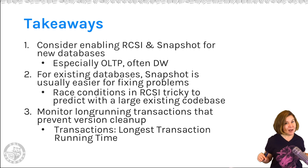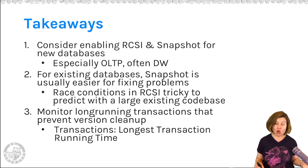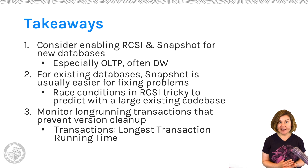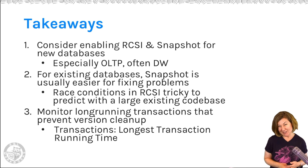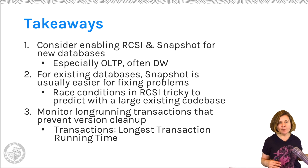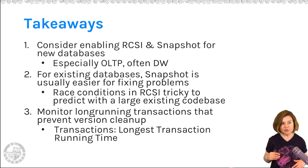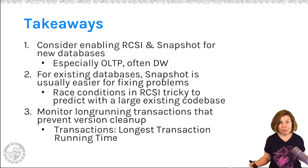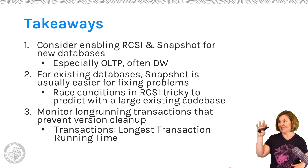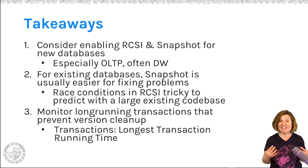Takeaways: for new applications and new databases, really consider starting with read-committed snapshot and snapshot. Make sure your team understands what that means in terms of blocking and set up test cases for what happens if people are reading during your modifications. Even in data warehouses, optimistic locking is becoming more common because the days when we could have a big outage to update the data warehouse with nobody reading it are going away. Users around the world need access around the clock, and letting people query a data warehouse during a data load can cause a lot of blocking. Using these isolation levels can help with that.